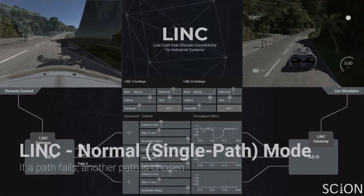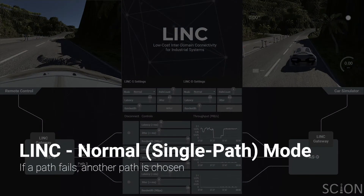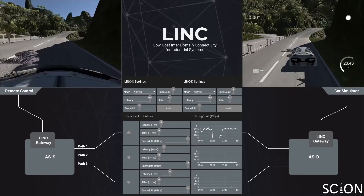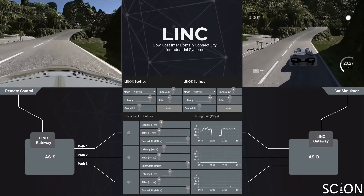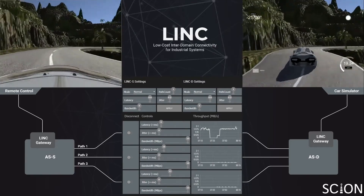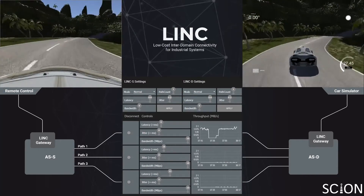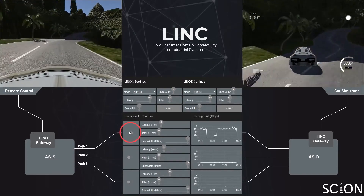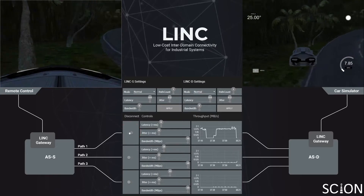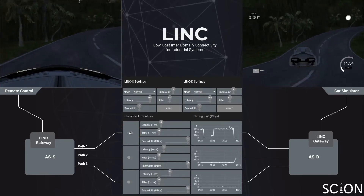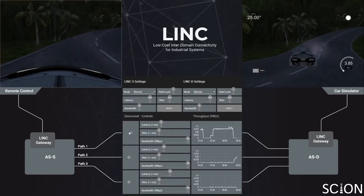In the second scenario, LINK is running in normal mode. If the chosen path fails, it chooses another path. The user sets the path selection preference. In this case, paths with low latency and jitter are preferred. The chosen path is disconnected, and the connection fails over to the next best path. In normal mode, the failover can take up to a second.